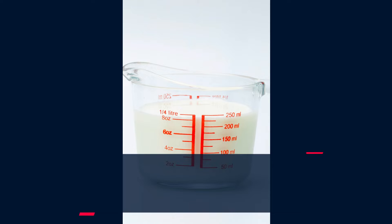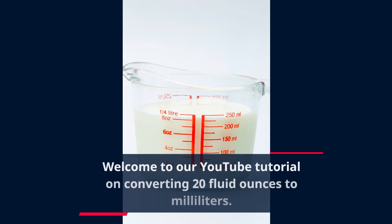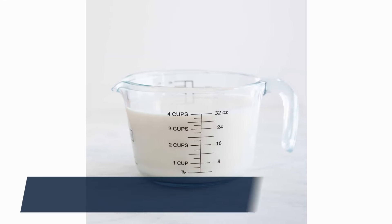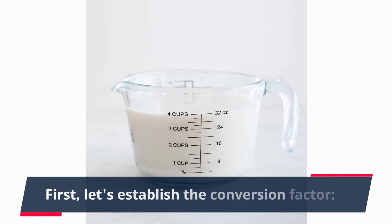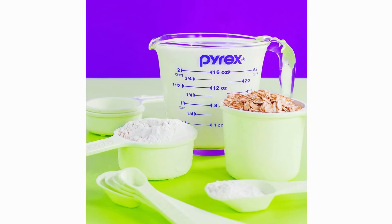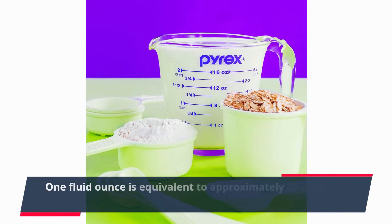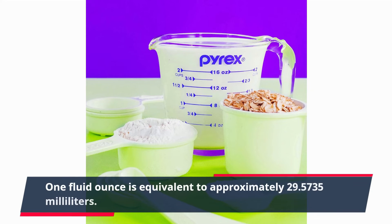Welcome to our YouTube tutorial on converting 20 fluid ounces to milliliters. First, let's establish the conversion factor. One fluid ounce is equivalent to approximately 29.5735 milliliters.